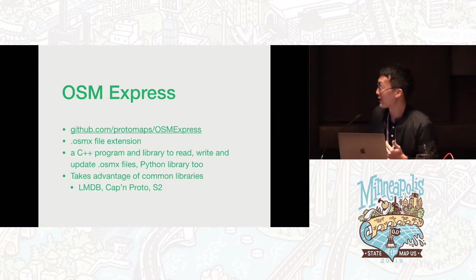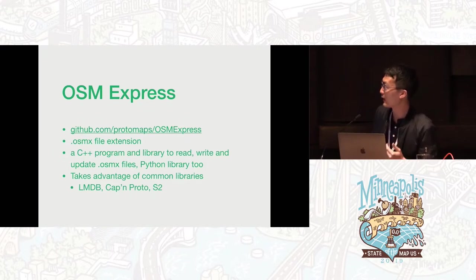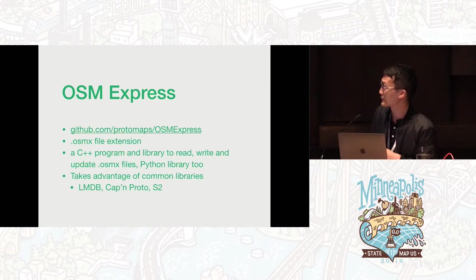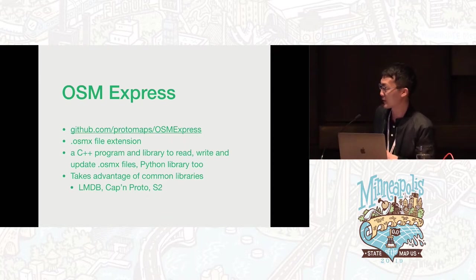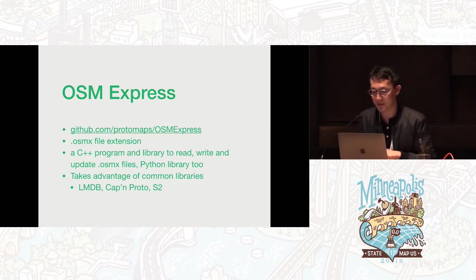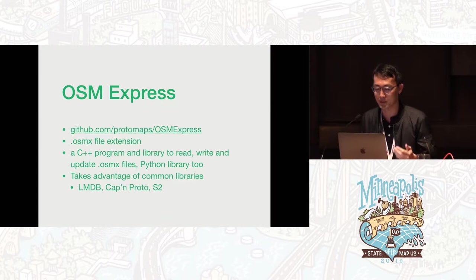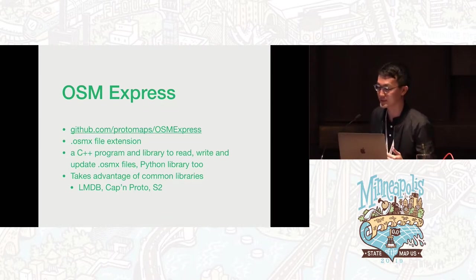The new library is called OSM Express. It defines a file format called the .osmx file, and it has a C++ implementation for reading, writing, and updating these files, as well as a Python library to read them. Its design takes advantage of really common libraries: it uses LMDB, a serialization library called Cap'n Proto, and S2 for indexing.